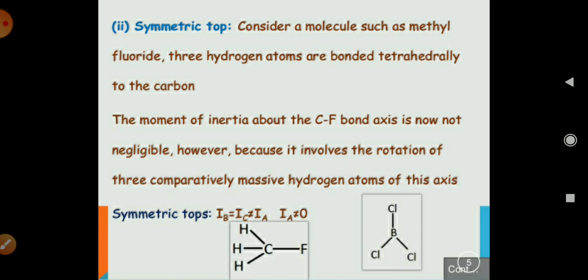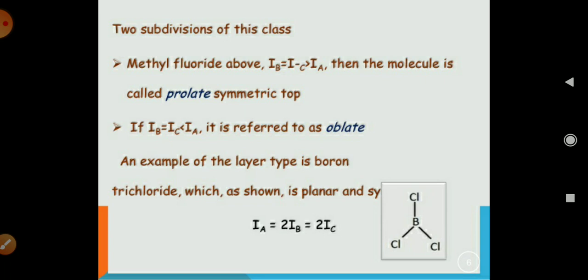So for this kind of molecule, Ib equals Ic but it is not equal to Ia, and also Ia is not equal to 0. The second example is CBCl3. In methyl fluoride, if Ib equals Ic and it is greater than Ia, then the molecule is a prolate symmetric top.